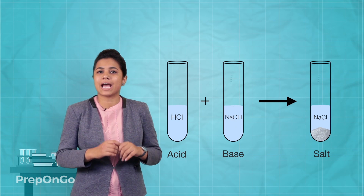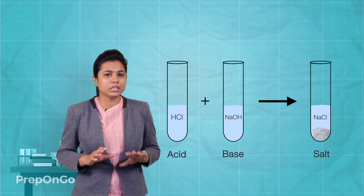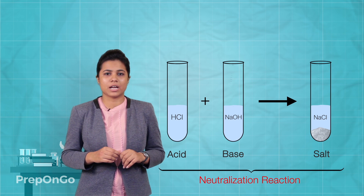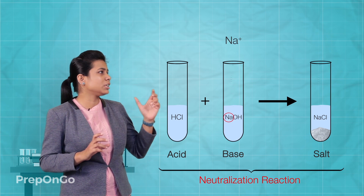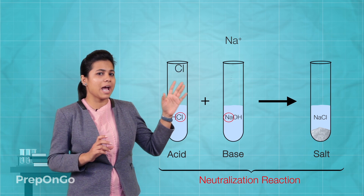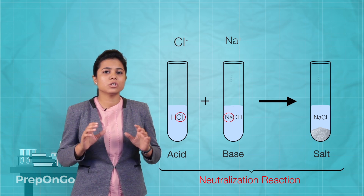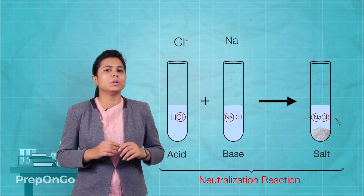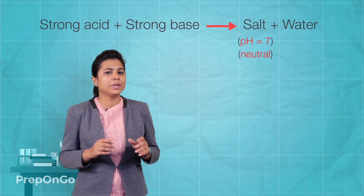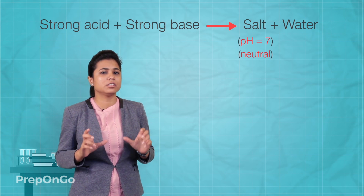We know that sodium chloride is used in preparing our food. We will see sodium chloride in detail, but let's first understand what exactly salt is. Salts are obtained by the reaction between acids and bases — they are formed due to neutralization reactions. The salts have the positive ion of the base and the negative ion of the acid, so a salt is normally neutral. When both the acid and the base are strong, the pH is 7 and we say the salt is neutral.